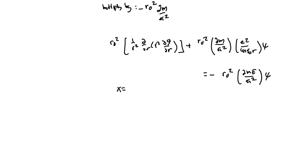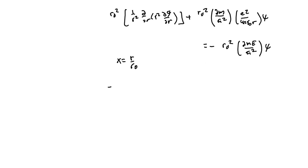Then I'm going to change variables so that X is R over R0. It's basically, it takes care of the dimensionality of R in a way. So I get an equation that looks like this.